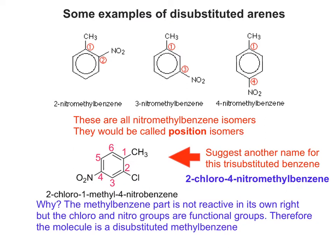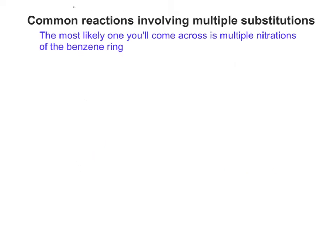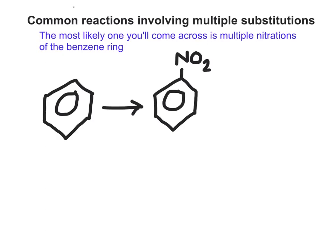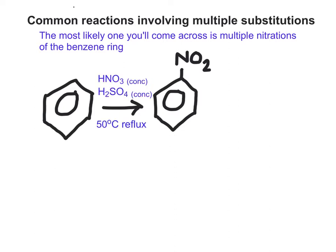The most likely reaction you'll come across is multiple nitrations of the benzene ring. Let's look at mononitration first - think back and see if you can remember the reagents and conditions. Hopefully you came up with concentrated nitric acid, concentrated sulfuric acid, and 50 degrees C reflux.